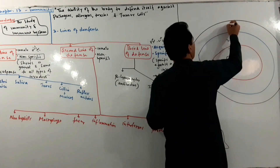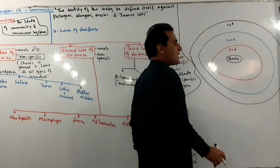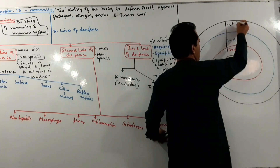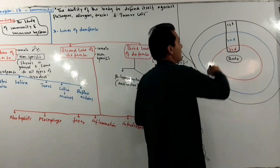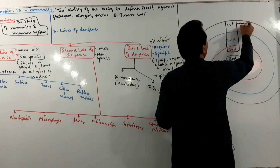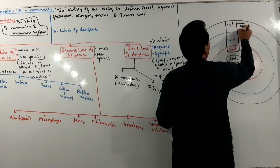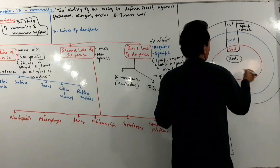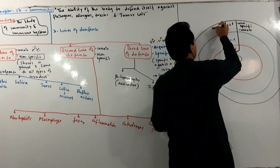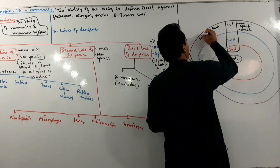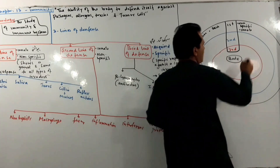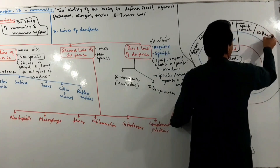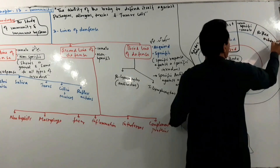The first line of defense. Each line of defense has properties and components. The first line of defense is non-specific. Another property is that it is innate. The components include skin, saliva, gastric juice. Other components involve reflexes. The body defends against external invaders.